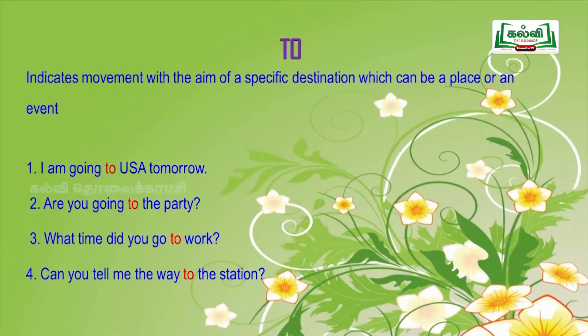Then comes the preposition to — the easiest preposition. It indicates movement with the aim of a specific destination, which can be a place or an event. Examples: 'I am going to USA tomorrow.' 'Are you going to the party?' 'What time did you go to work?' 'Can you tell me the way to the station?'